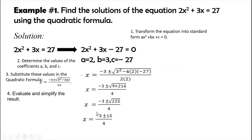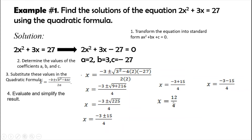We haven't finished because we need the two roots of the equation — there's a plus and a minus sign. We separate them. For the plus: x equals negative 3 plus 15 divided by 4, which is 12 divided by 4, so x equals 3. For the minus: x equals negative 3 minus 15 divided by 4, which is negative 18 divided by 4, giving x equals negative 9 over 2.